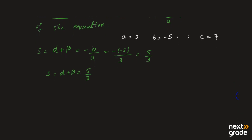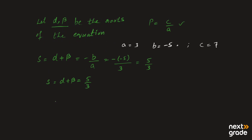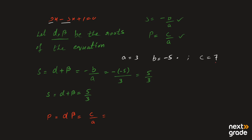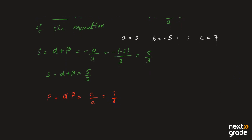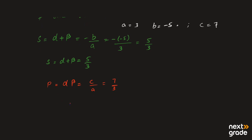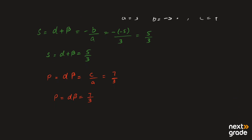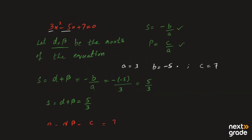اب اگر ہم product of roots find کرنا چاہتے ہیں تو product of roots کا formula یہ ہے: P is equal to c over a. چونکہ ہم product find کرنا چاہتے ہیں تو ہم ان roots کو multiply کروائیں گے: alpha × beta is equal to c over a, and this is P, یعنی product of roots. اب c کی value equation میں 7 ہے اور a کی value 3 ہے۔ تو alpha × beta = 7/3, which is equal to P. So the product of roots is 7/3.